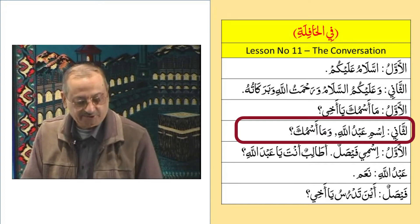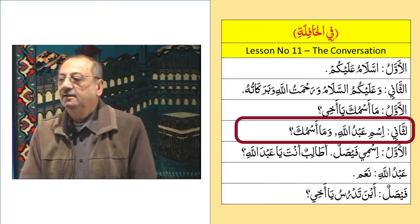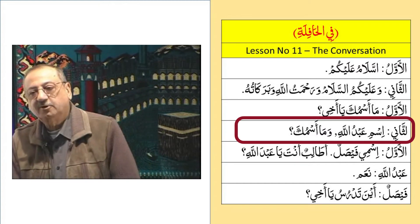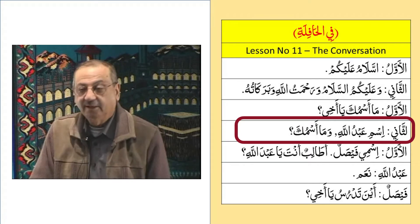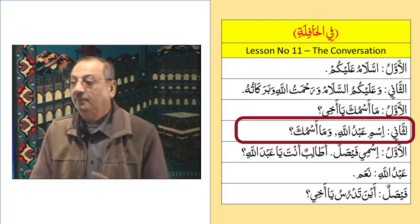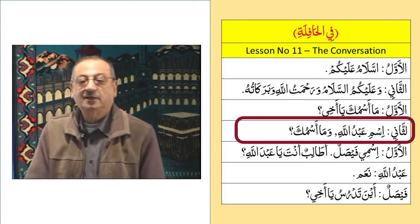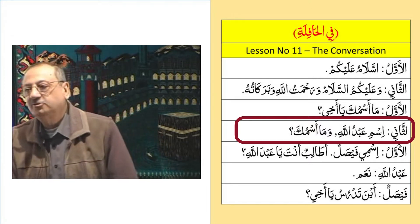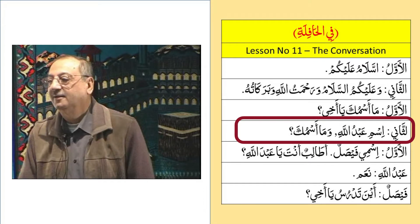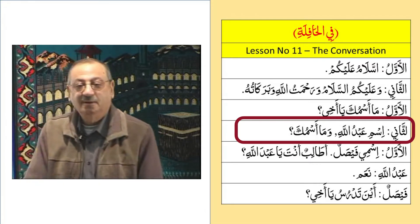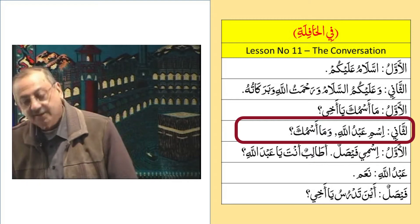Let's analyze 'Ismi Abdullah.' Both 'Ismi' and 'Abdullah' are compounds — Mudaf and Mudafilihi. This is a Jumlah Ismiya. In 'Ismi': Ismu is the Mubtada and Mudaf; Ya mutakallam is Mudafilihi. In 'Abdullah': Abdu is the Khabar and Mudaf; Allah is Mudafilihi. Mashallah, it is fresh in your mind.